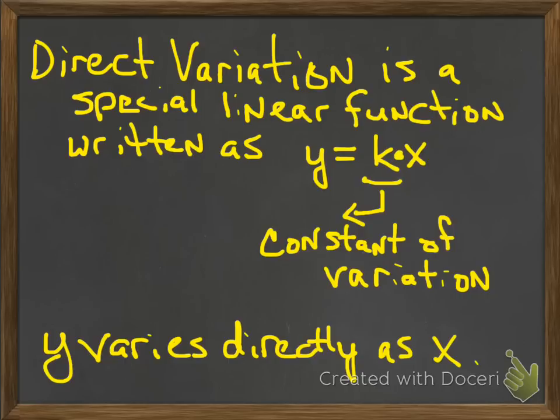Okay, so here we have direct variation, which is a special linear function written as y equals k times x. In all these functions or variation functions, you're going to see a k, and the k is called the constant of variation. It's kind of like a slope, but we're thinking of it differently for the other types. Your key words are 'y varies directly as x.' So every time you see that, you're using that formula y equals k times x, or whatever variables, k times something.